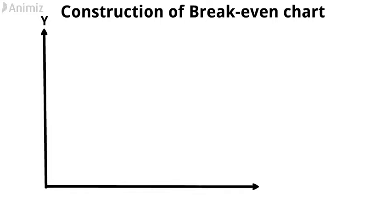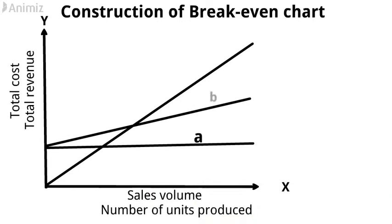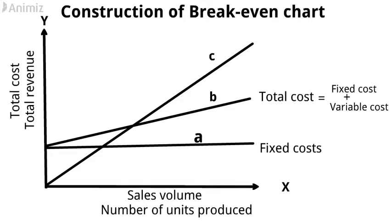The break-even chart consists of a Y-axis representing total cost and total revenue, and an X-axis representing units of output, or sales volume, or number of units produced. There are three lines marked as A, B, and C on the break-even chart. Line A represents the fixed cost function — fixed cost doesn't change with the increase of sales volume. Line B represents the total cost, which increases linearly; it is a monotonic function that increases with increasing volume of production. Total cost results from the summation of fixed costs and variable cost. Line C represents the sales revenue line, or total sales levels — this line shows the income at varying levels of output.